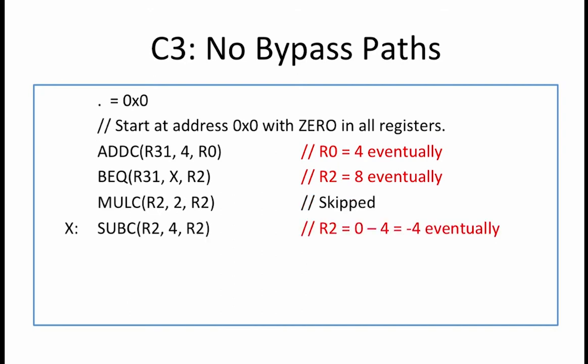When the SUBC reads R2, it gets a stale value of R2 because the BEQ instruction has not yet completed, so it assumes that R2 equals 0. It then subtracts 4 from that and tries to write minus 4 into R2.